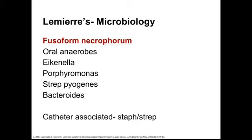As far as the microbiology for Lemierre's syndrome, the big boards answer is Fusobacterium bacteria. Part of the controversy in treating patients with a dose of penicillin for positive Centor criteria — even if they have a negative rapid strep — is that you're treating for Fusobacterium and therefore preventing Lemierre's disease. Other bacteria you see are oral anaerobes, Eikenella, Strep pyogenes, and Bacteroides. If this is an ICU patient who has an IJ catheter, think about staph or strep.